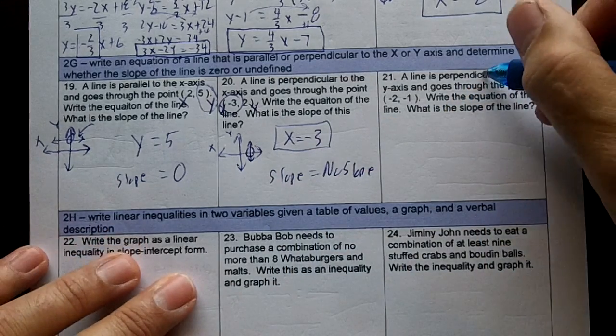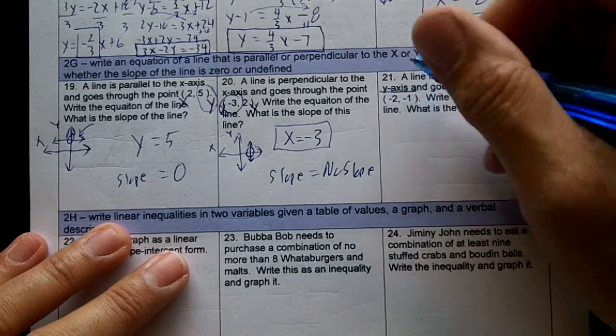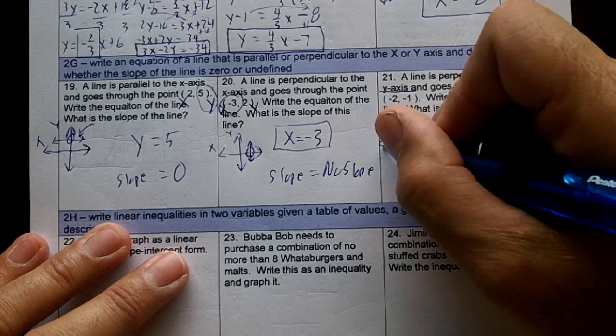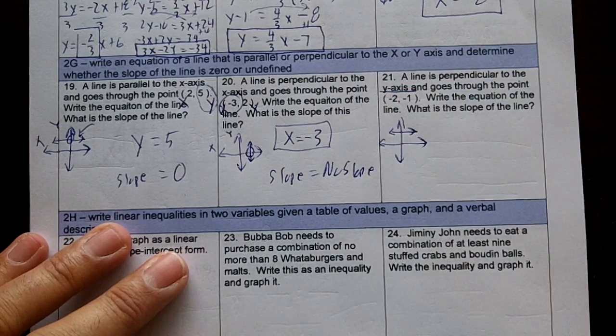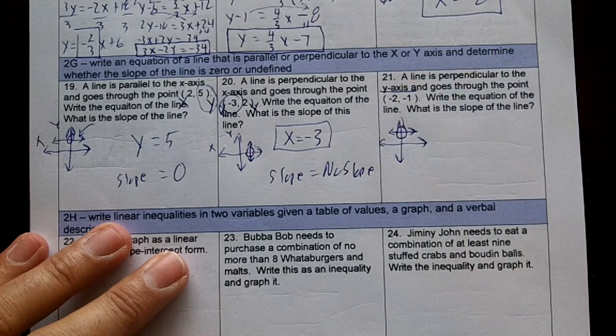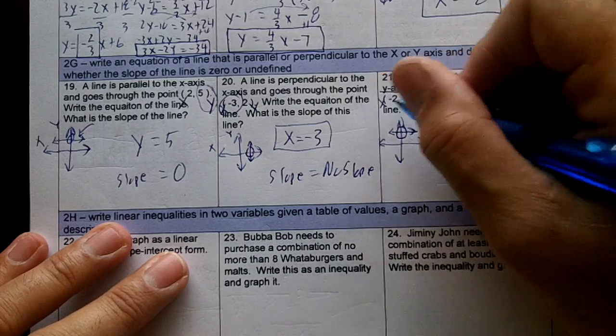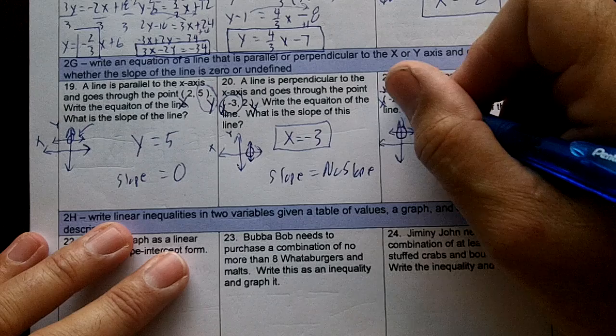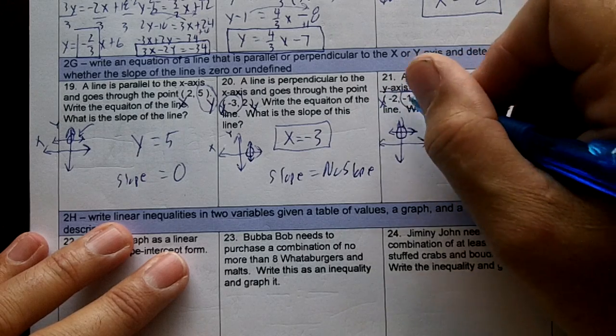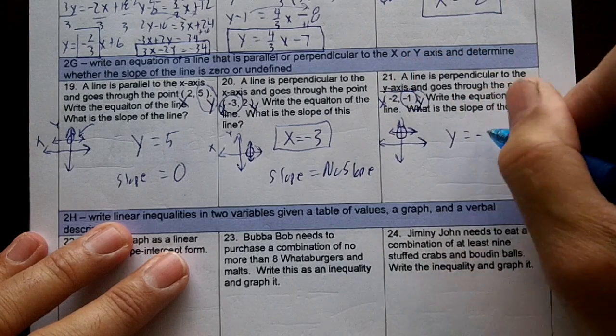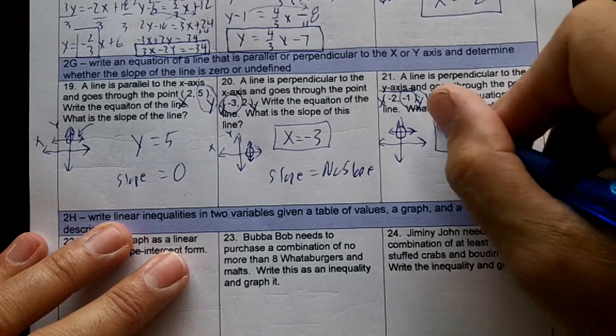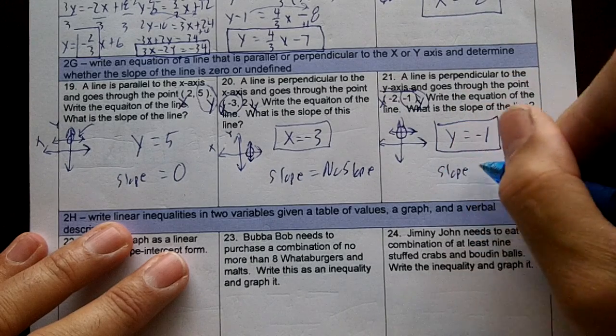Number 21, a line is perpendicular to the y-axis. So draw an x-y-axis. If it's perpendicular to the y-axis, it does this. It's going to cross the y-axis. So this is my x, this is my y. It doesn't cross the x, it crosses the y, and it will cross at y equal negative 1. And this has a slope of 0.